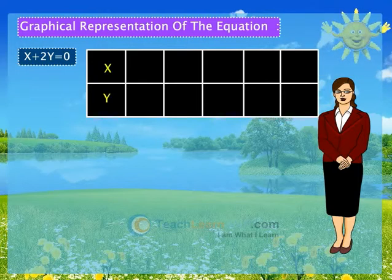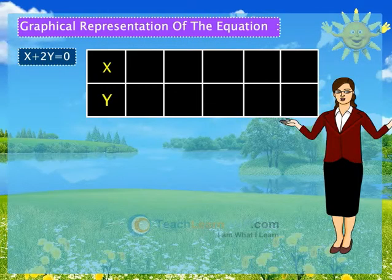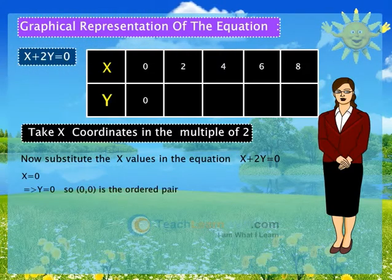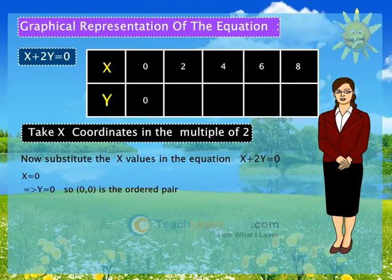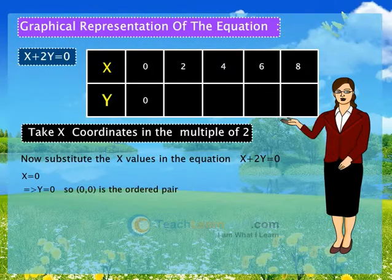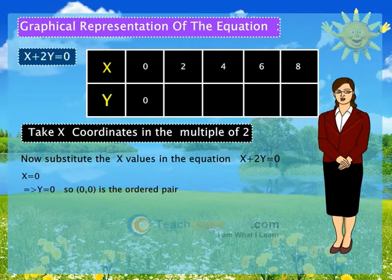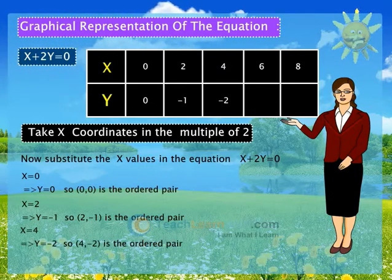Take x coordinates in the multiple of 2. If x equals to 0, then y equals to 0. So, (0,0) is the ordered pair. Similarly, other coordinates can be calculated.